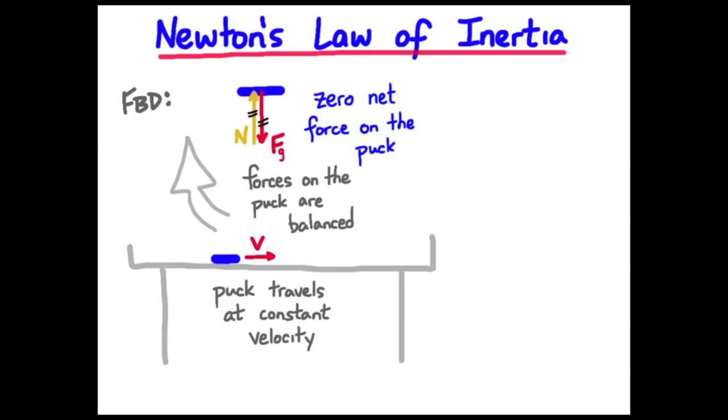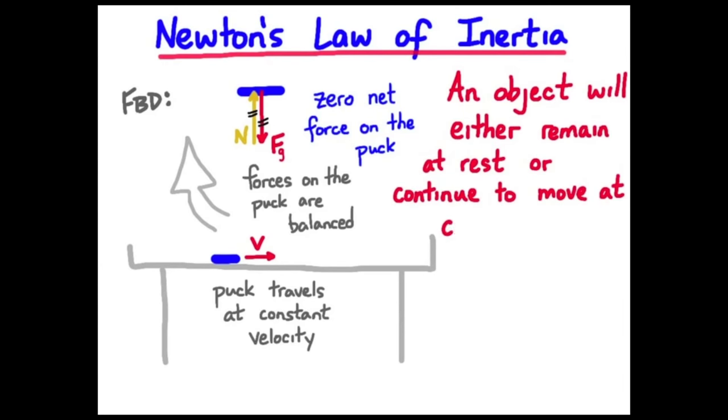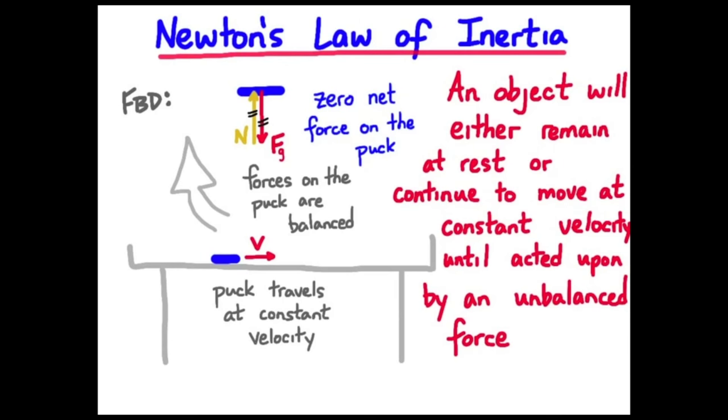So now we've got a more general explanation, a description of Newton's law of inertia, Newton's first law. And it goes like this. The physics book sitting on the desk at rest, no unbalanced force. The puck on the air table traveling along at constant velocity, again, no unbalanced force or forces were balanced. So here we have Newton's law of inertia. An object will remain at rest or continue to move at constant velocity unless acted upon by an unbalanced force.